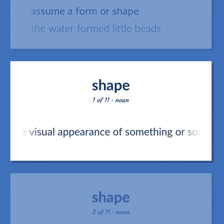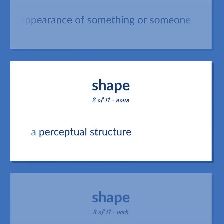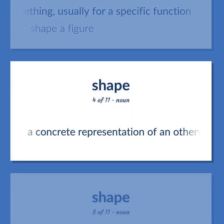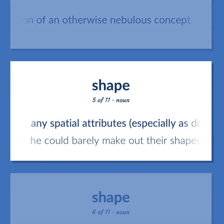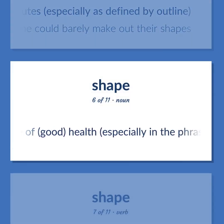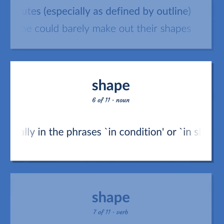Shape: The visual appearance of something or someone. A perceptual structure. Make something, usually for a specific function — shape a figure. A concrete representation of an otherwise nebulous concept. Any spatial attributes, especially as defined by outline — he could barely make out their shapes. The state of good health, especially in the phrases: in condition, in shape, out of condition, or out of shape.